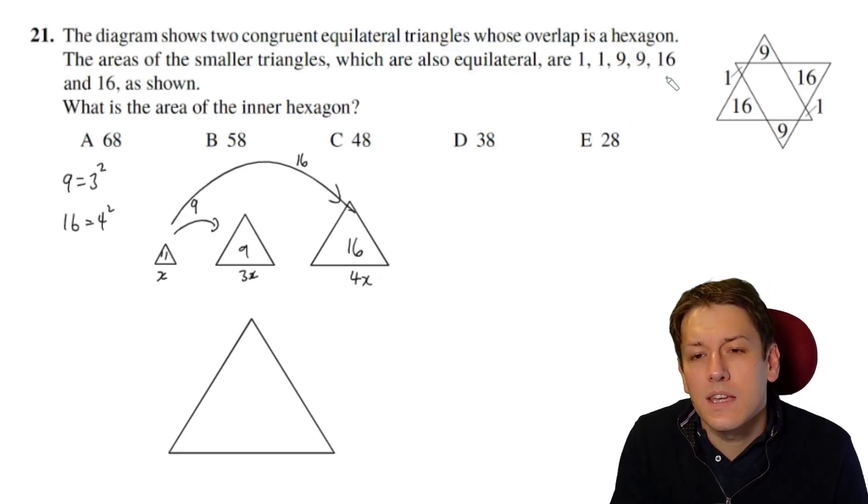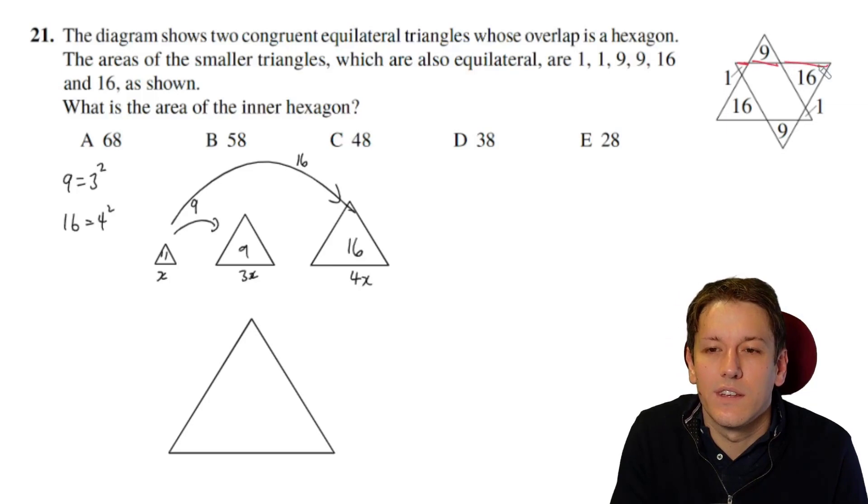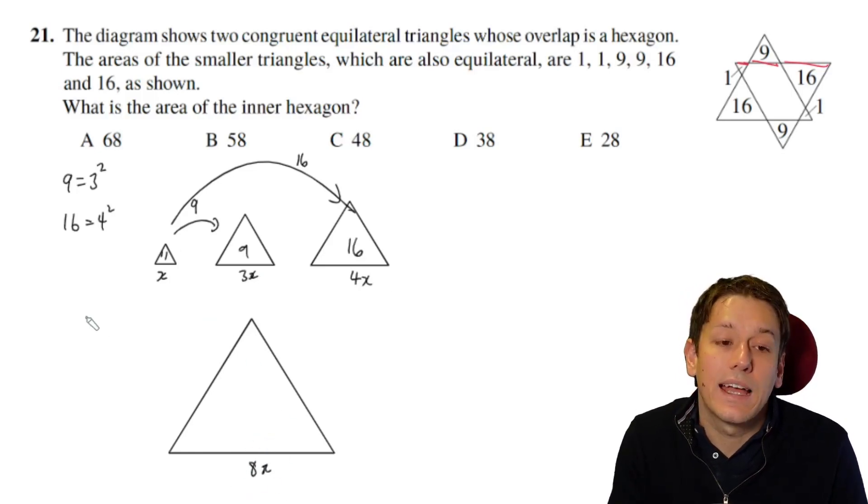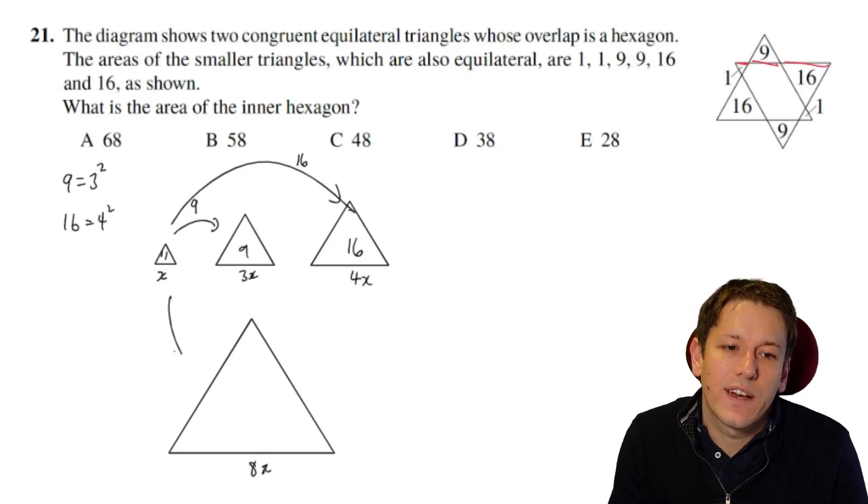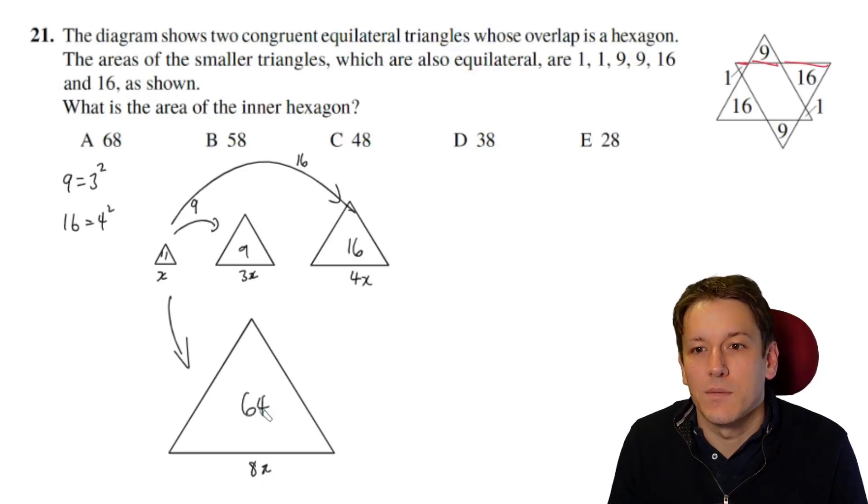And what we can see on the picture is that the large triangle is made, that one side of it is made up of a side of the smallest one, the middle one, and the third one here. So actually the total length of this one must be 1x plus 3x plus 4x, which is 8x. And that means that the scale factor from here to here is going to be 8 squared, because the length scale factor is 8, so the area scale factor from here to here is 8 squared, which is 64. And so the area of this large triangle must be 64.